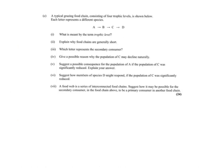Here's an exam question: a typical grazing food chain with four trophic levels is shown — A is eaten by B, eaten by C, eaten by D. The first question asks: explain what is meant by the term 'trophic level'. The answer is that it refers to the feeding position or position in a food chain.